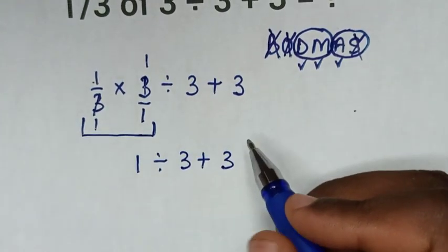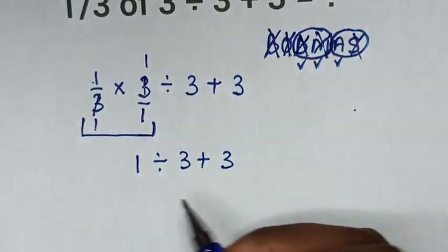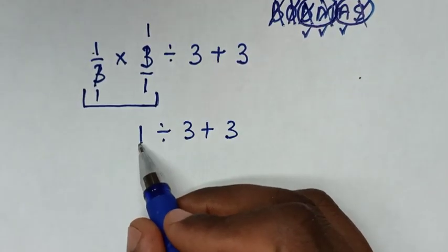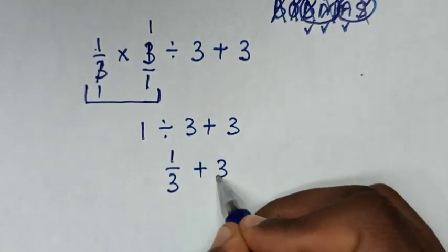After we already deal with multiplication, we deal with division. Now in the end, this division of 1 divided by 3 is the same as 1 over 3, then plus 3.